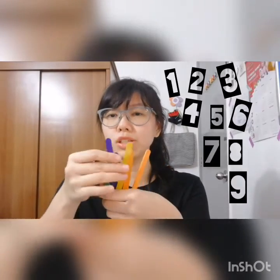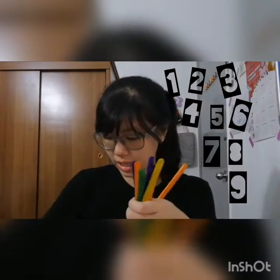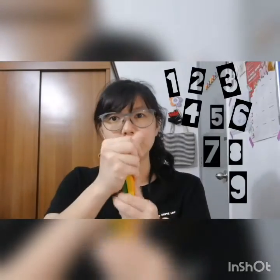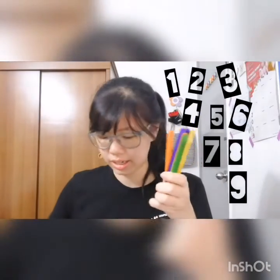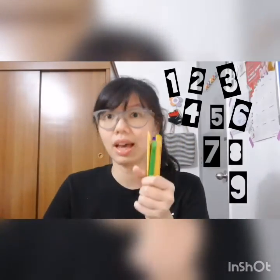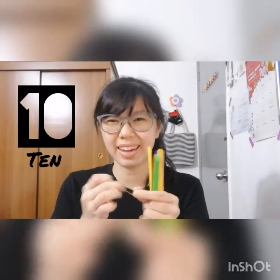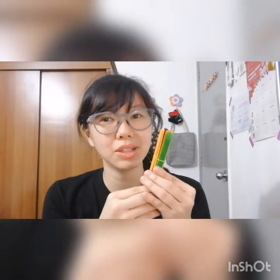So all these popsicle sticks we have been counting 1 by 1, and just now we finished counting at 9. I'm going to add one more and it becomes 10. So once it becomes 10, I'm going to put it together in a bundle. Why? To make it easier to count.